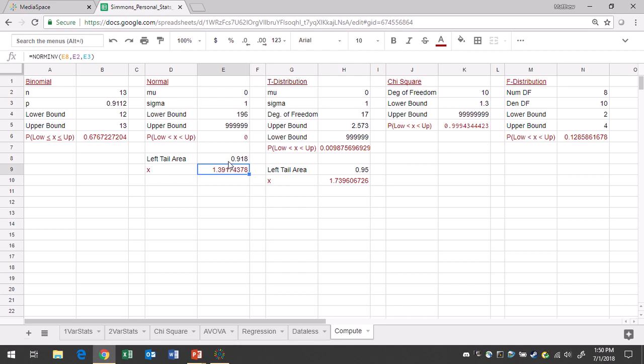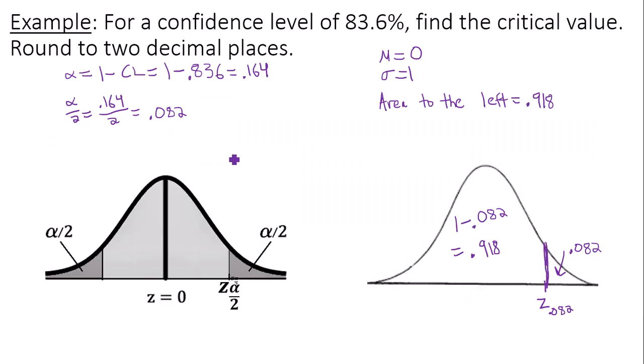And it turns out that 1.39 is my critical value here. So my z sub alpha over 2 is 1.39.